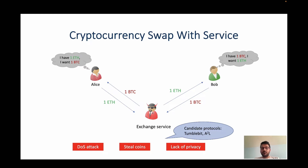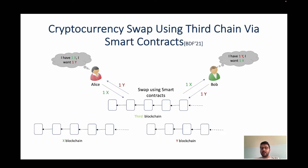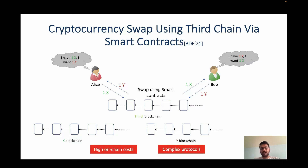Another approach for an atomic swap is making use of a third blockchain that supports smart contracts. The logic of the smart contract ensures the atomicity of the swap. But this solution relies on the guarantees and mechanics of this third blockchain and requires complex smart contracts that could be expensive to execute.